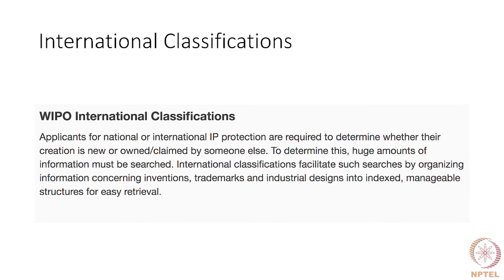WIPO — the World Intellectual Property Organization — is the main organization which deals with intellectual property rights, and WIPO has its own classification called the IPC classification. WIPO not only has classification for patents; it also has classifications to facilitate search of information concerning inventions, trademarks, and industrial designs. So the ambit of WIPO is much bigger than patents itself.